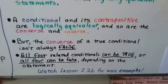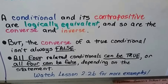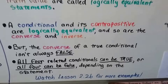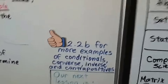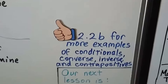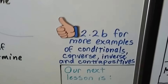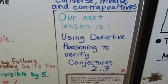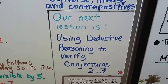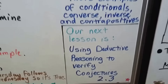If you're still really confused about this, I'm going to make a short lesson 2.2b with more examples. You can watch that and there'll be several more examples for conditionals, converse, inverse, and contrapositives. If you understood all this, you can go to the next lesson using deductive reasoning to verify conjectures — that'll be 2.3.